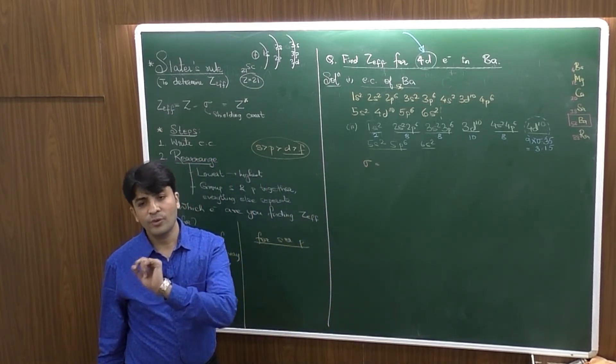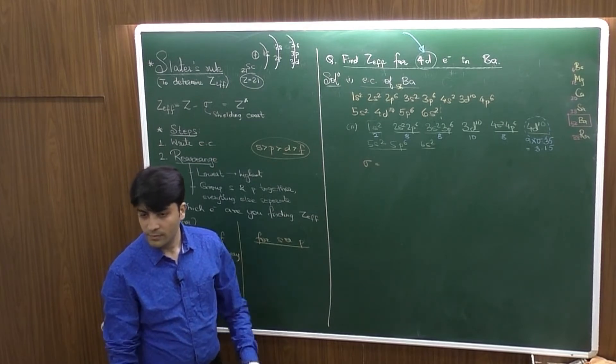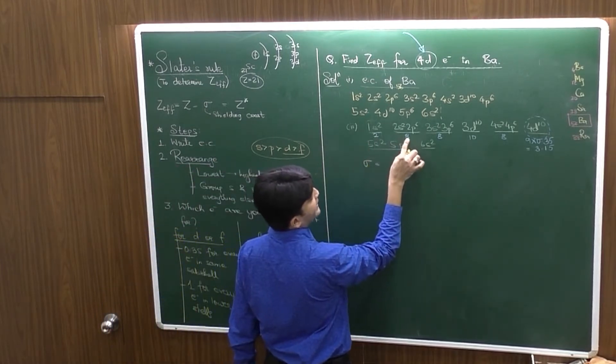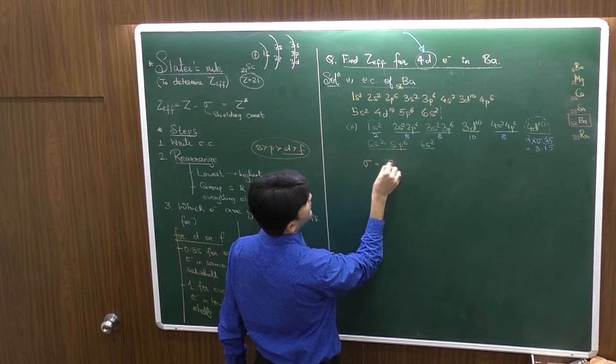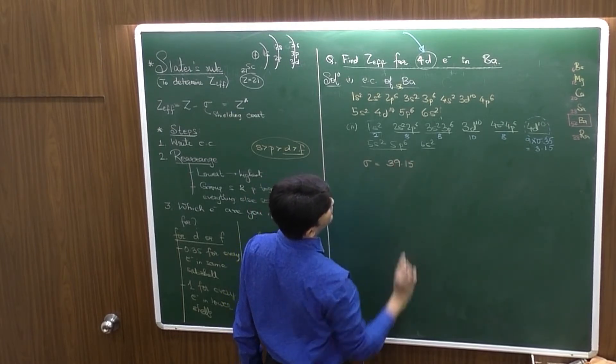From the question, which electron are you finding Zeff for? It's a D electron. Follow the rule which is given for D or F. Now, add up all these values, you will get the value of the screening constant. It is 2 plus 8, 10, 18, 28, 36 and 3, 39.15.